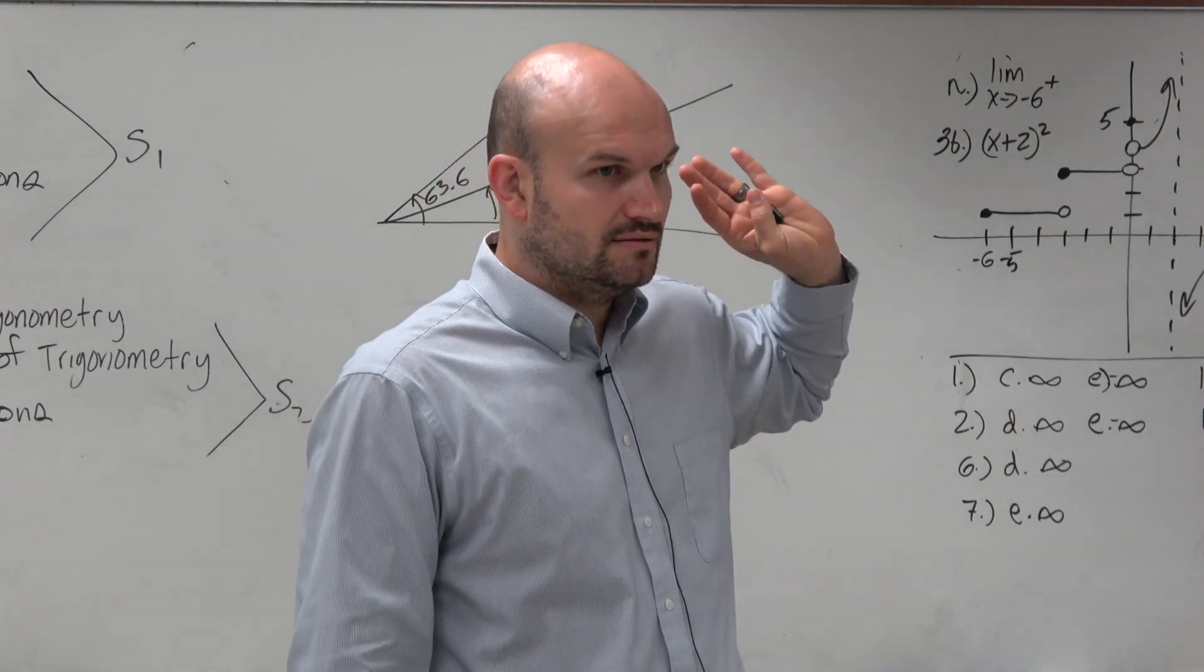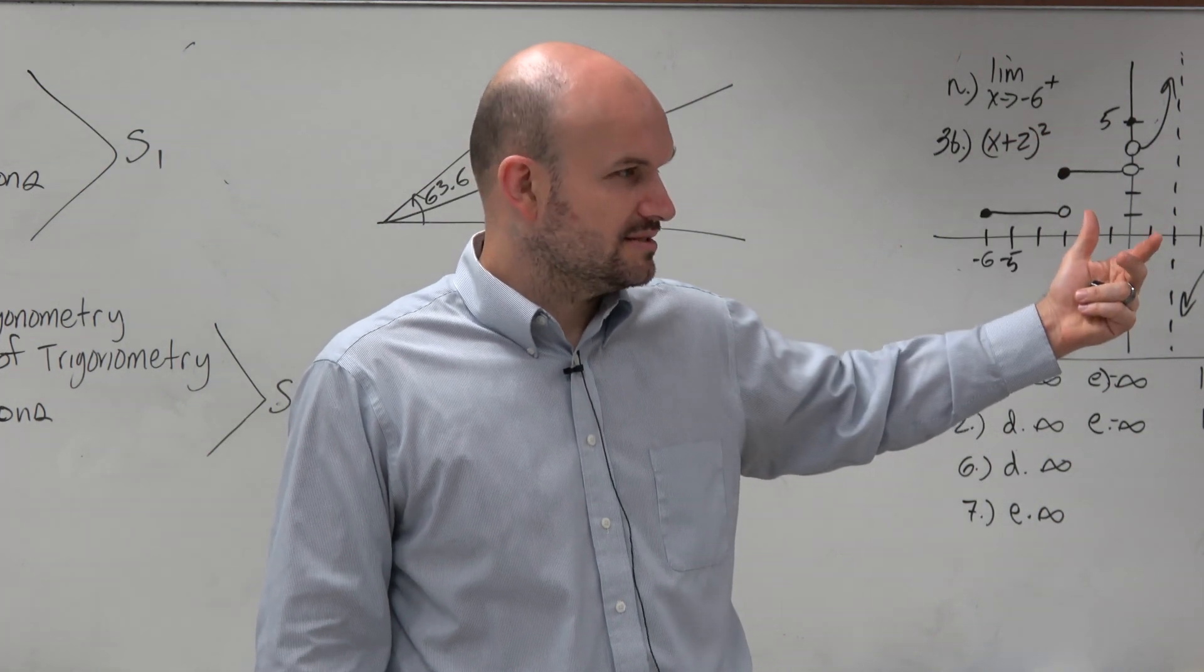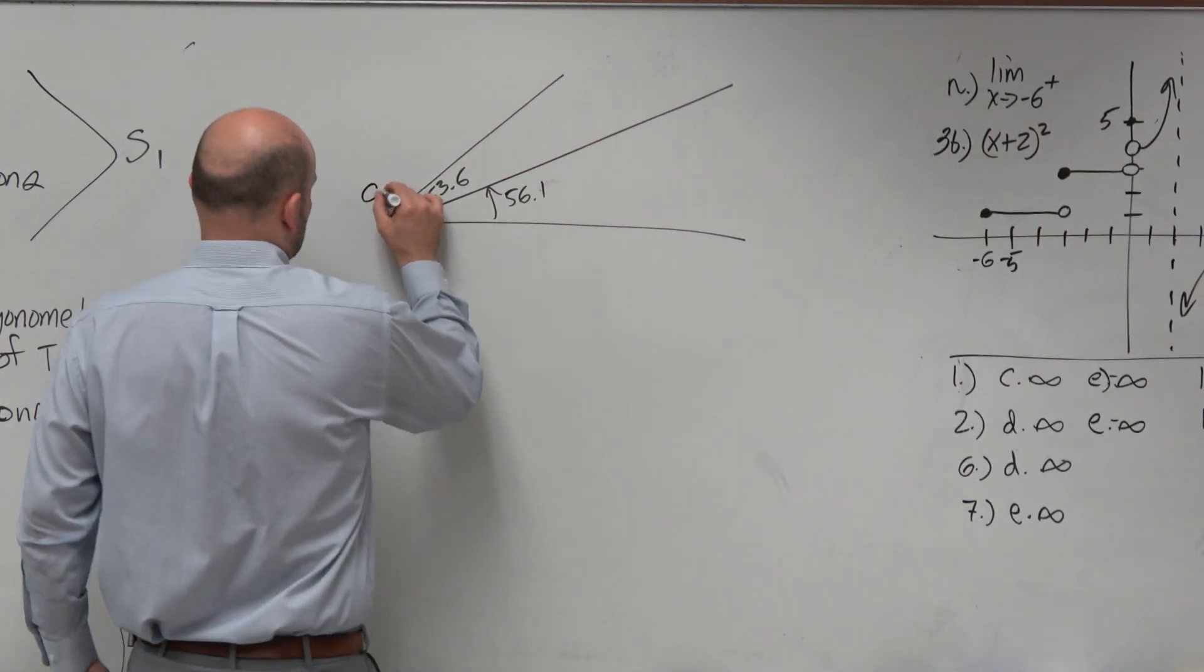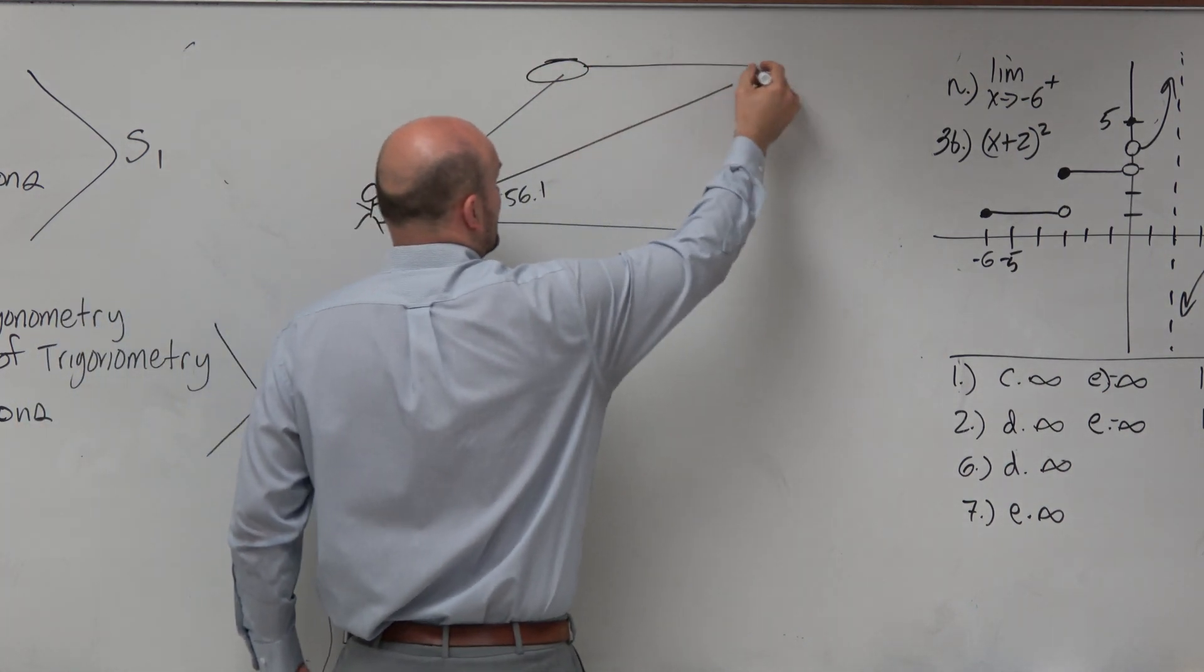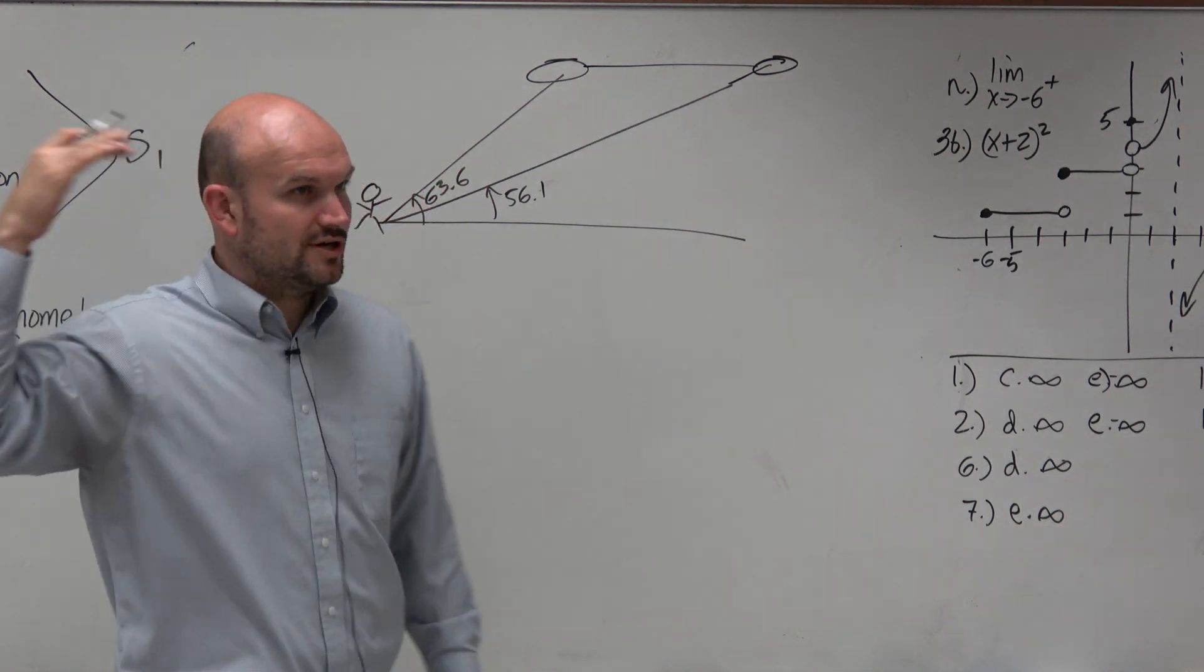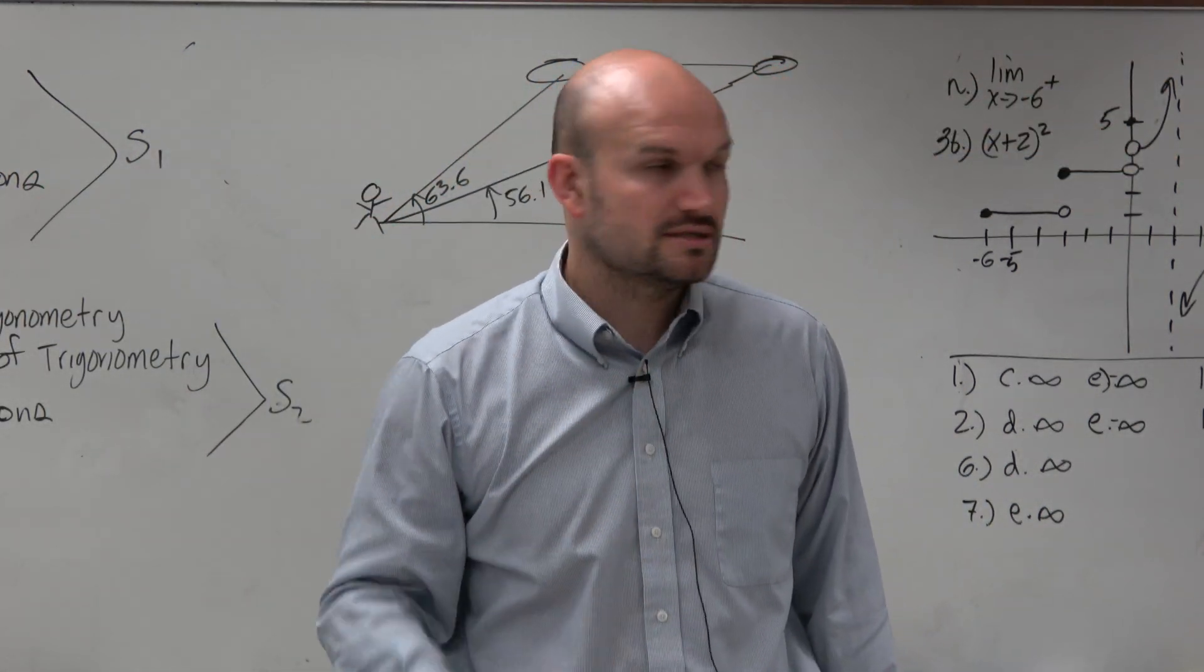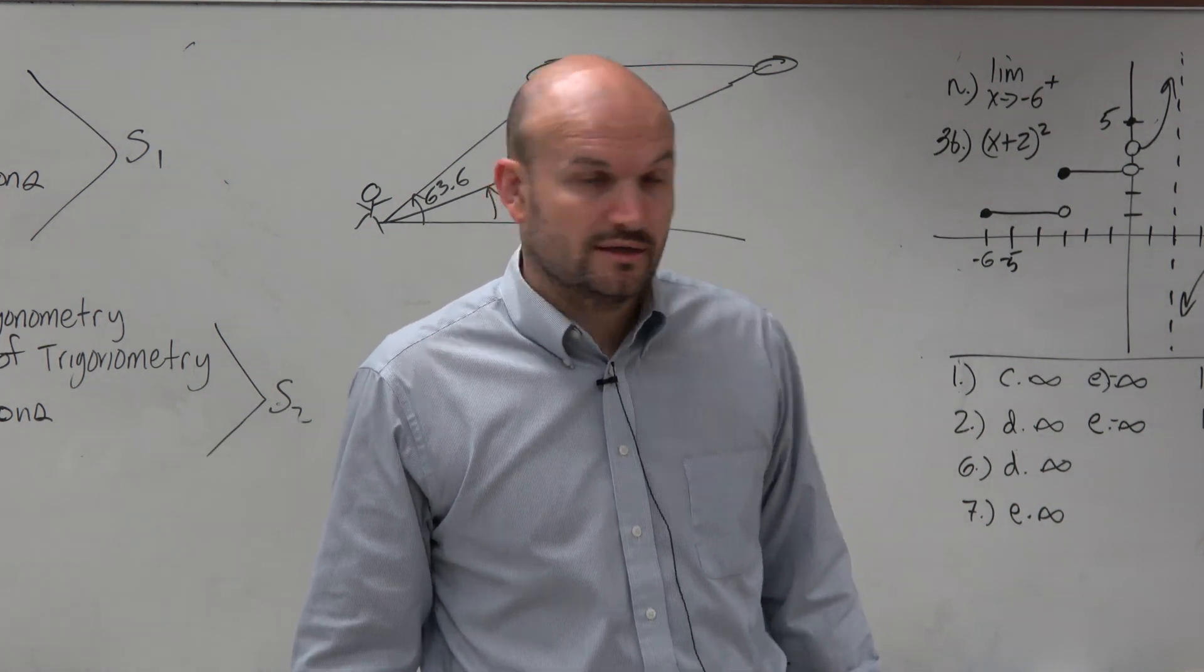So is this plane going away or coming closer? What would make sense? It's going away, right? You can say here's the person that's observing, here's the plane, and then it went from here to there. So 33 seconds later, it's traveling that distance. Does that make sense?